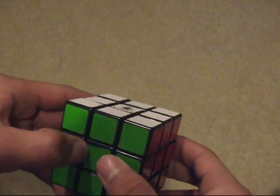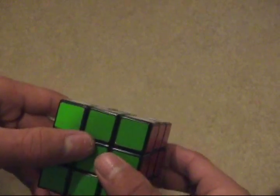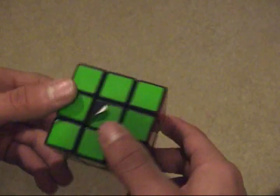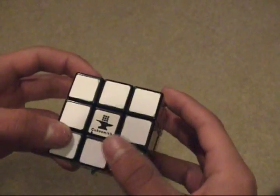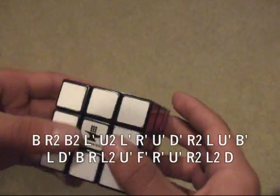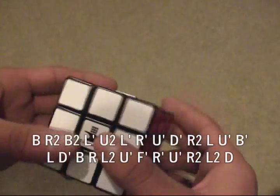Okay, I'm just going to do a quick example solve or walkthrough using the Petrus method. I'll post the scramble in the video description and on the screen so you can follow along.